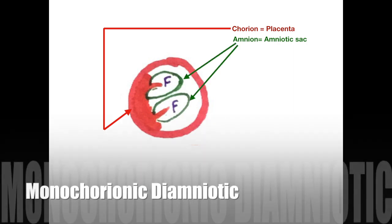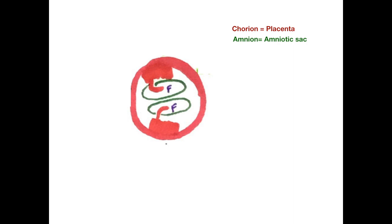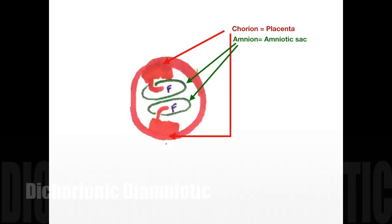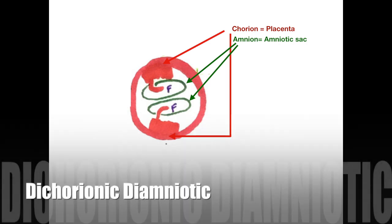Finally, twins which don't share any of it and have one placenta and one amniotic sac each are known as dichorionic diamniotic twins.